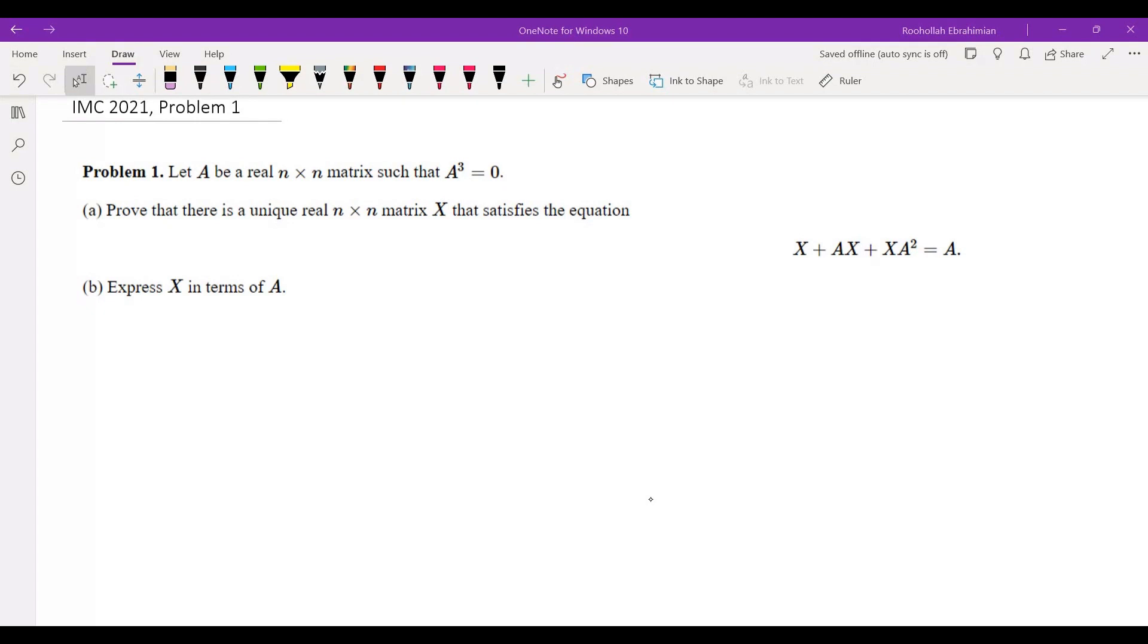But if they were just real numbers where you could commute A and X, then you could write it down as X times I plus A plus A squared equals A. Of course this doesn't work because X and A may not commute.